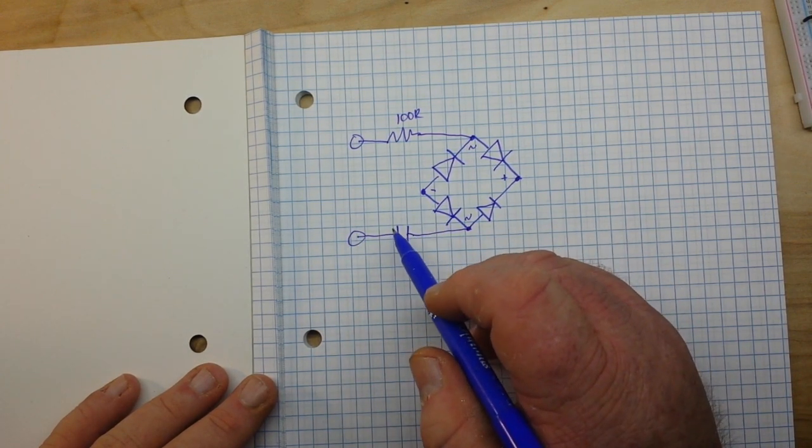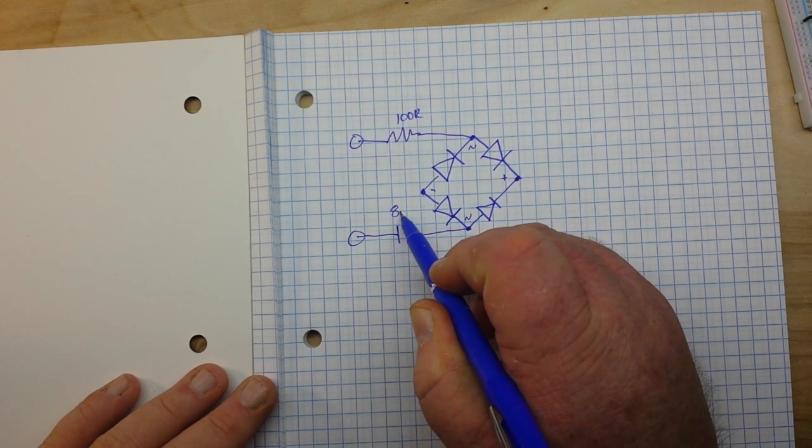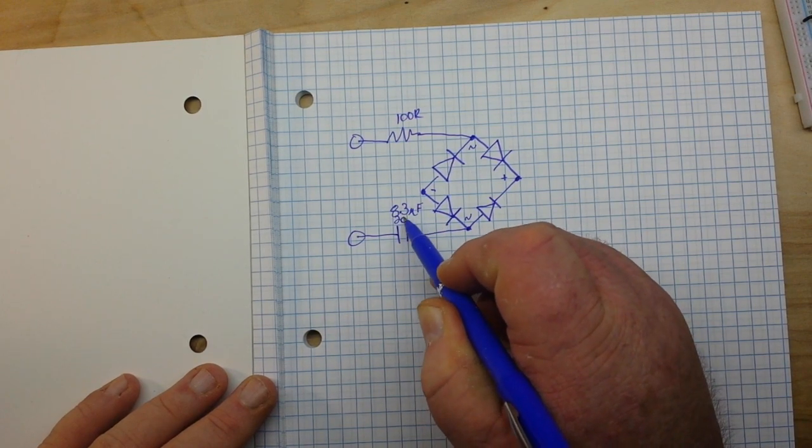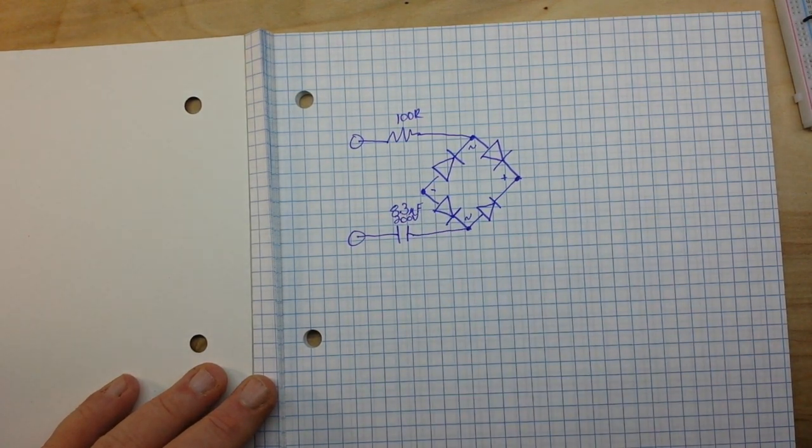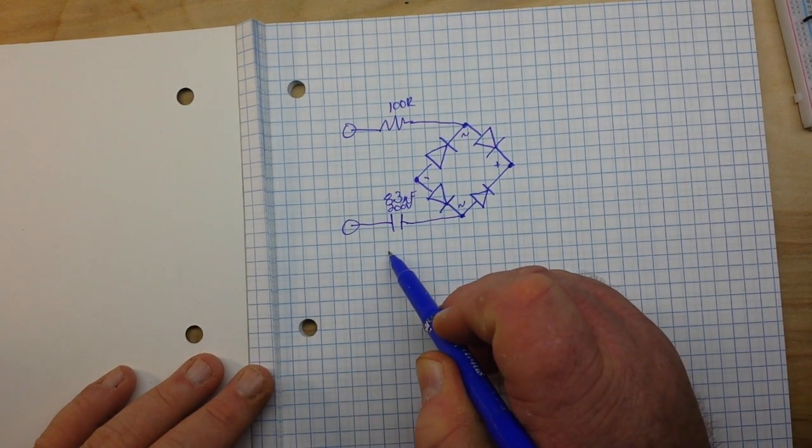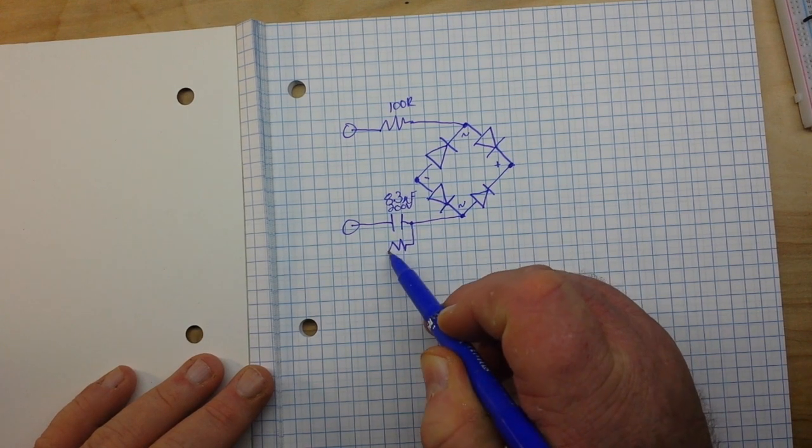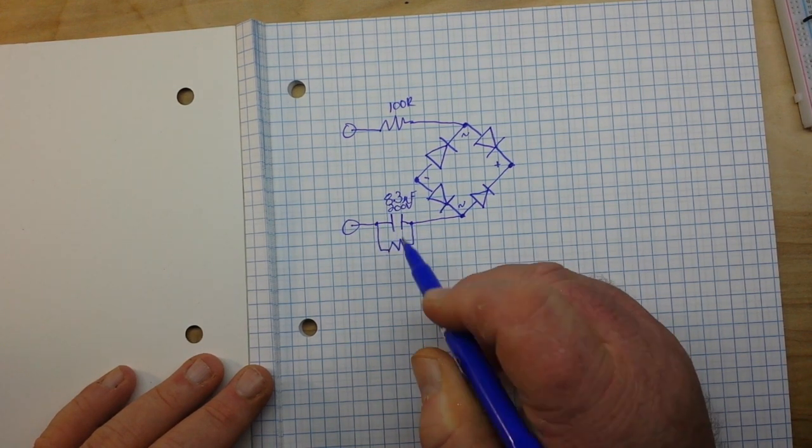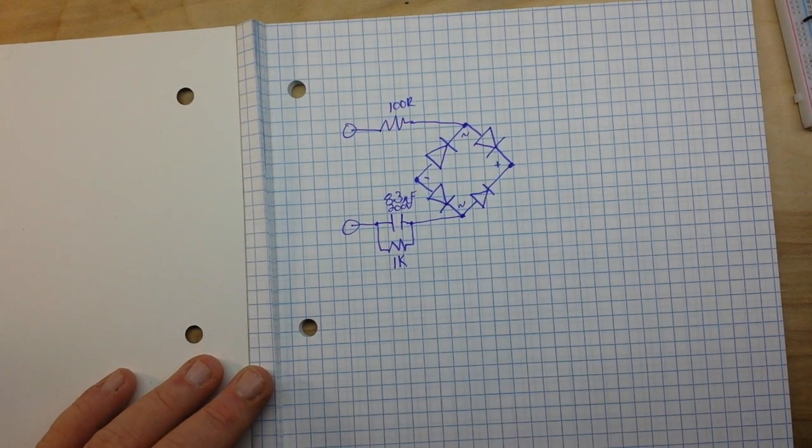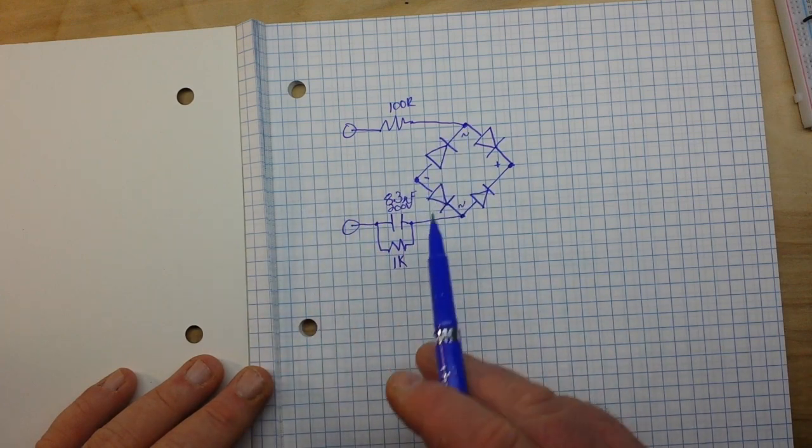...is going to have our capacitive dropper. In this case, we're going to use 8.3 microfarad 200 volts, and we are of course going to put a discharge resistor across it.